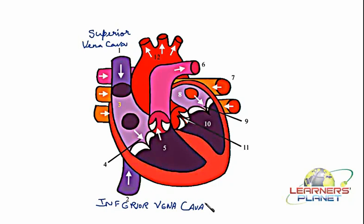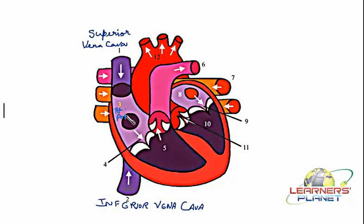Now where is this blood going to be poured inside? It is going to be poured inside the first chamber which is towards the right side of this structure, and here we have numbered it as number three. So this particular chamber that you can see here is actually the auricle, or you can call it the atrium — so this is the right atrium. I am writing the short form here: RT for right, and atrium or auricle as shown to you.